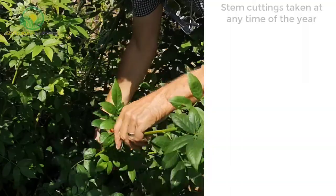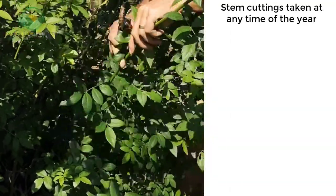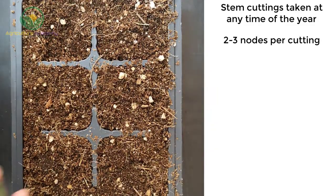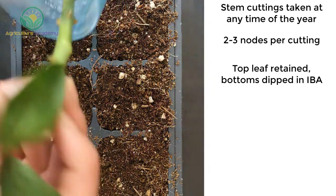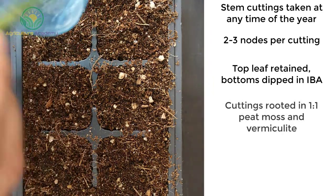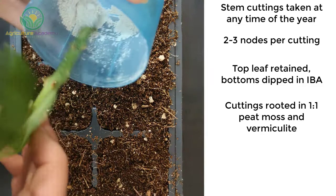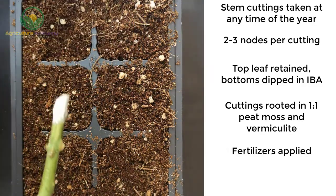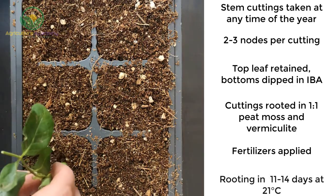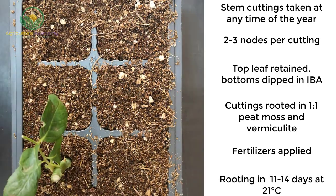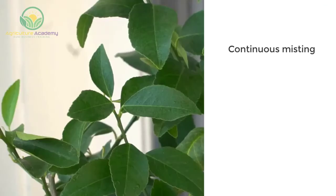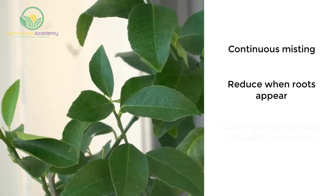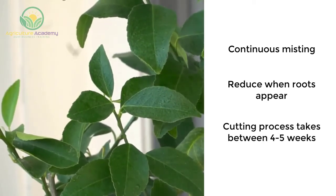Cuttings. Stem cuttings can be taken at any time of the year. There must be two to three nodes on a cutting. The top leaf is retained and the bottoms are dipped in indole butyric acid. The cuttings are rooted in equal ratios of peat moss and vermiculite. Fertilizers are applied at this stage. Rooting is observed in 11 to 14 days at temperatures of 21 degrees Celsius. Misting must be continuous but can be reduced once rooting begins. The entire process takes between four to five weeks.